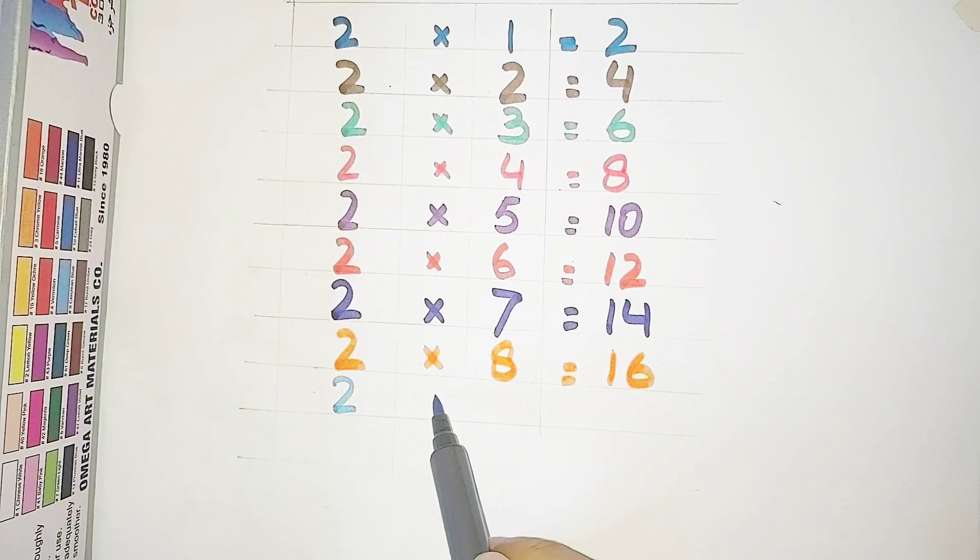2 multiplied by 9 is equal to 18. 2 nines are 18.